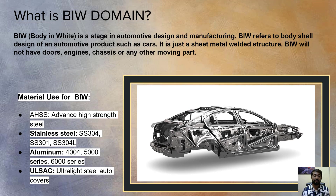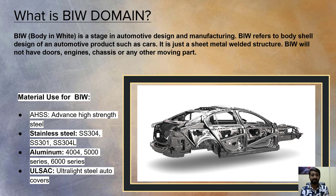The next popular and growing field is BIW — Body in White. BIW is a stage of automotive manufacturing and design, referring to the body shell design of an automotive product such as cars. It is a sheet metal welded structure. BIW does not include doors, engines, chassis, or any other moving parts — it is a completely non-movable structure. Engines and chassis are not part of BIW design.